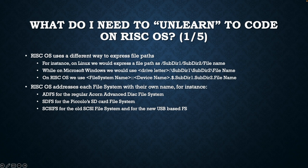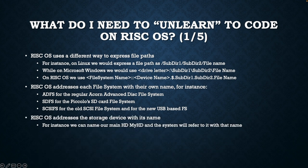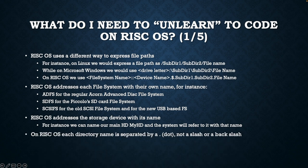RISCOS addresses each file system with its own name. For instance, ADFS for the regular Advanced Disk File System, SDFS for the Piccolo's SD card file system, and SCSIFS for both the old SCSI file system and the new USB-based file system. RISCOS addresses the storage device with its name — for example, we can name our main hard drive MyHD and the system will refer to it with that name. In other words, we are not limited to drive letters only as happens on Microsoft Windows. Each directory name is separated by a dot, not a slash or a backslash.